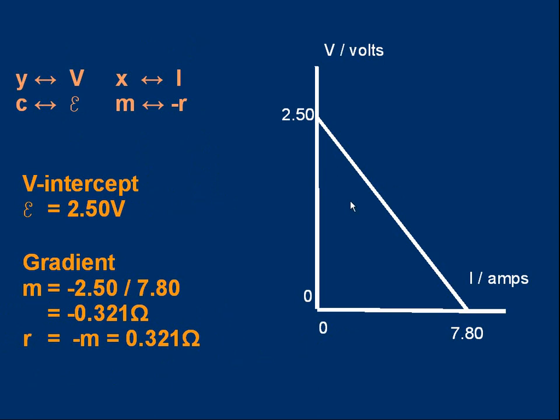Now we can use our knowledge to work out values of the emf e and the internal resistance r. First of all, we know that the intercept on the v-axis is going to be our value of emf. Do you remember? Emf corresponds to c. That's the y-axis intercept. Well, we've got a v-axis here. Immediately we can say the emf is the intercept. It's 2.50 volts.